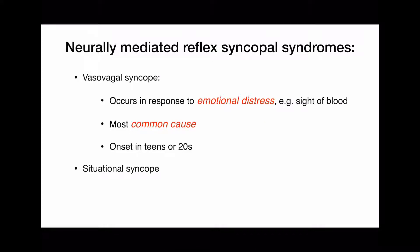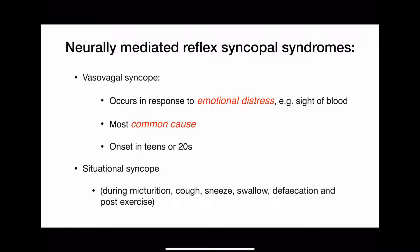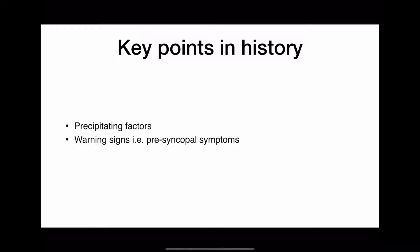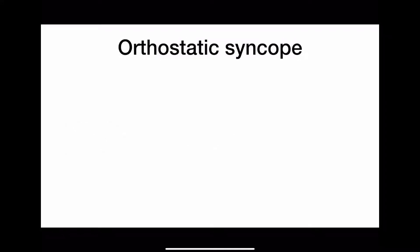In situational syncope, a known precipitant triggers autonomic reflexes resulting in cerebral hypoperfusion and loss of consciousness. Triggers include micturition, cough, sneeze, swallow, defecation, and post-exercise. In history taking, ask about these precipitating factors, the presyncopal warning symptoms, and whether the patient sustained any injury — noting that injury is very uncommon in these cases.